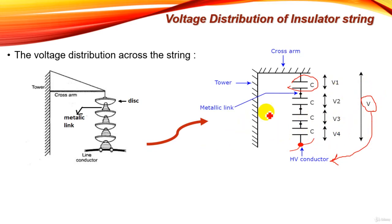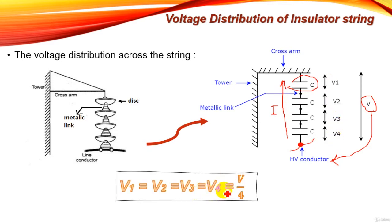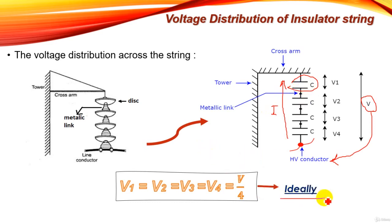In the ideal case, all capacitors have the same value and the same current flows through each capacitor. From these two facts we can deduce that V1 equals V2 equals V3 equals V4, and each voltage equals the total voltage V divided by 4, where 4 is the number of units. This is the ideal voltage distribution, but unfortunately this ideal case does not happen in a real insulator string.